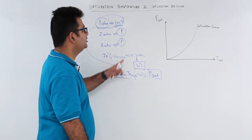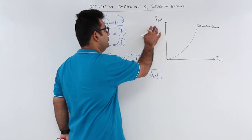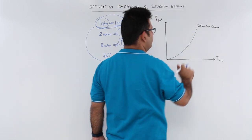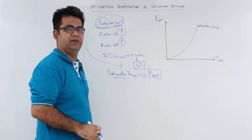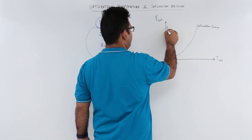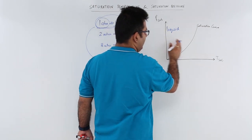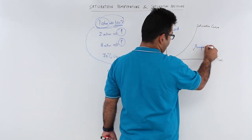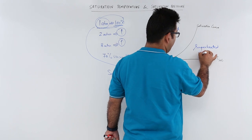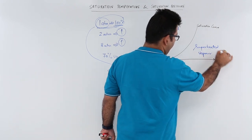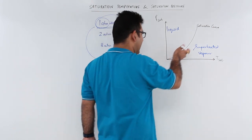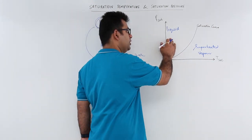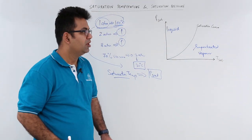You can see this variation on the graph between saturation pressure and saturation temperature — this is called the saturation curve. On the left side of the saturation curve you have the liquid phase, and on the right-hand side of the saturation curve we have the superheated vapor phase. On the saturation curve itself you have saturated vapor — you cool it, you condense it; you heat it, you get into the superheated range.